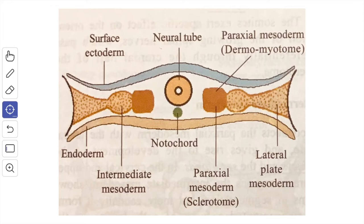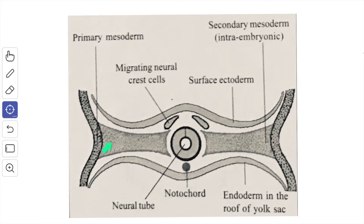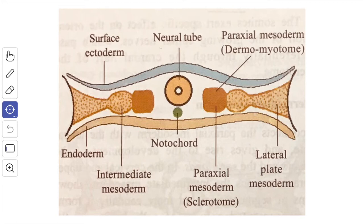In this video, we'll see the differentiation that takes place in the intraembryonic mesoderm during the embryonic period. At first, the intraembryonic mesodermal cells are distributed as a loose sheet on either side of the median plane. In the later part of the pre-somite period, a longitudinal groove appears and subdivides the mesoderm into three parts.